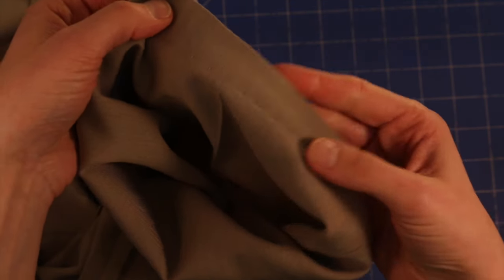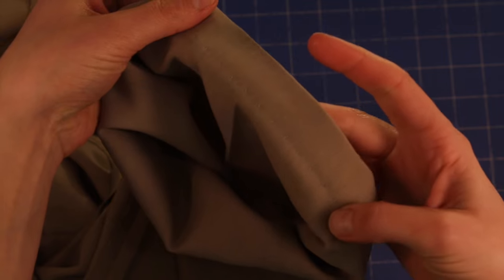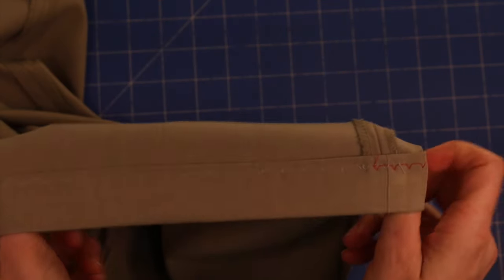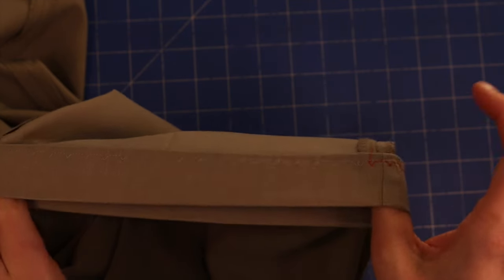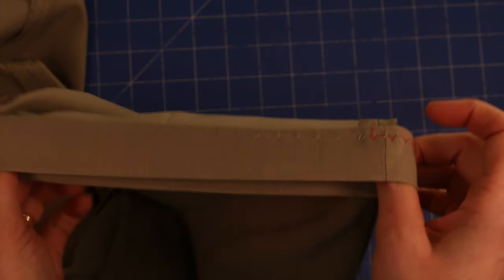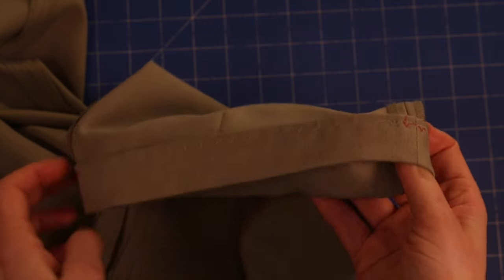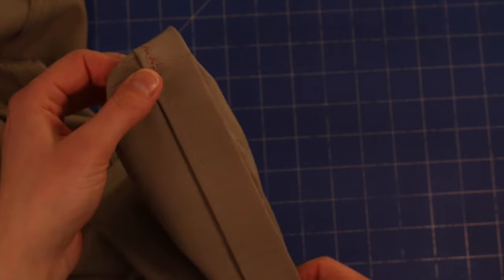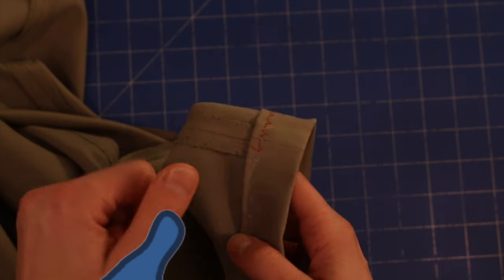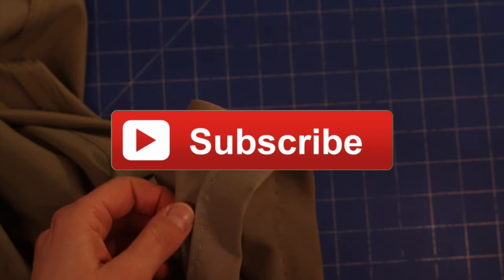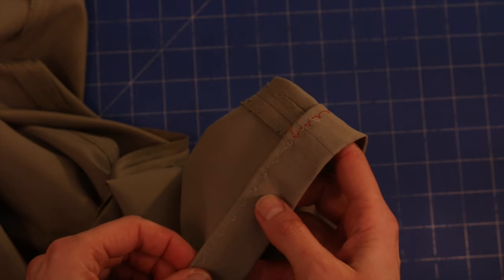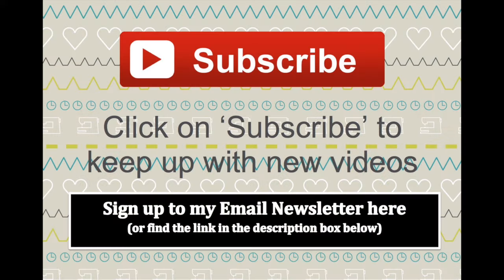So there you have it - you just need to repeat that with both legs and you have hemmed your pair of pants with the sewing machine. I hope you found this video useful and it's helped you learn how to hem pants with your sewing machine. Give me a thumbs up, don't forget to subscribe so you can be notified of upcoming videos, and thanks for watching. See you.